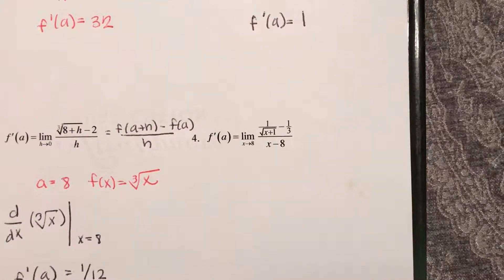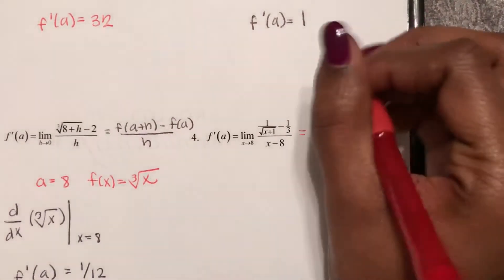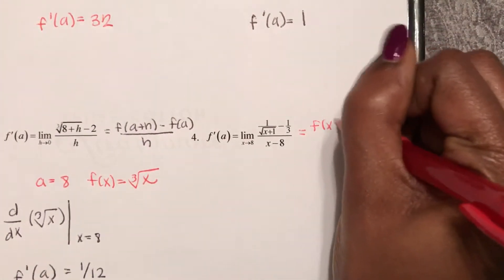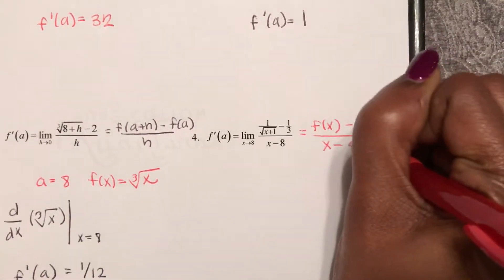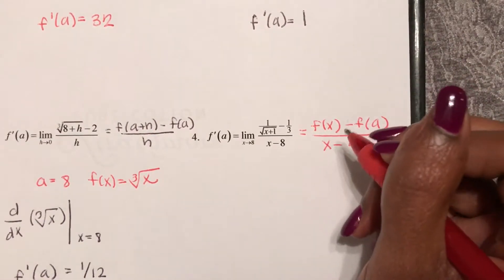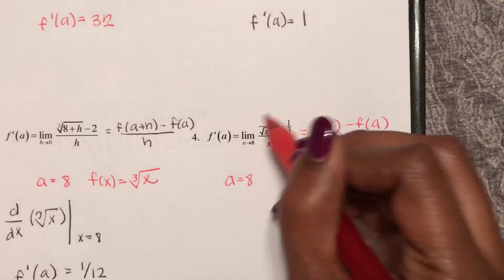So here our last example like this is using the second form for a derivative, which is f(x) minus f(a) over x minus a. So from that I know a is 8 and if this is f(x)...